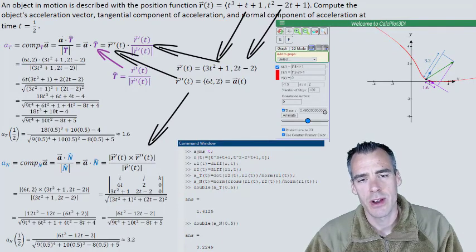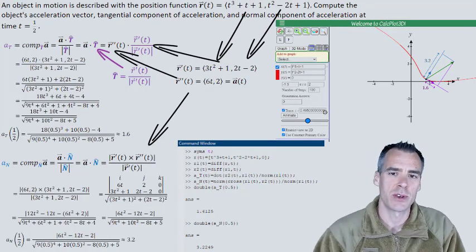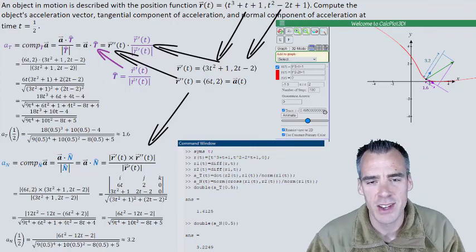So in conclusion, that's how you crank through the numbers to find the normal and tangential components of acceleration. Hope this was helpful. Until next time, take care.